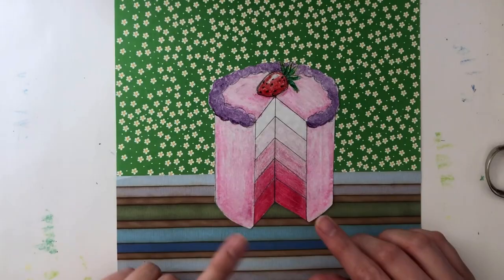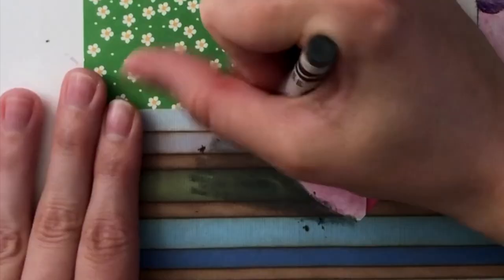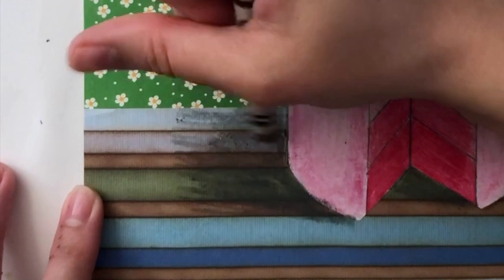To help our cakes look even more 3D, we can add some value to the table. For this, you can use a pencil or a gray crayon. I'm using a gray crayon and I'm adding a shadow to one side of my table. I'm also going to add a little bit of a shadow onto the inside of my cake.